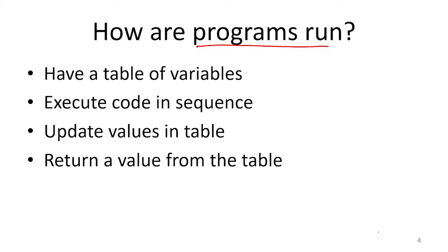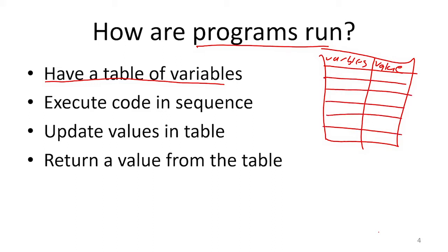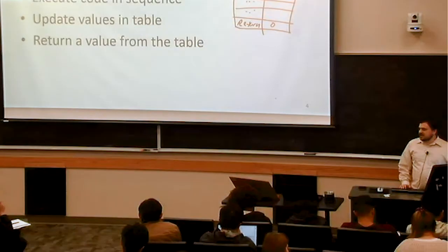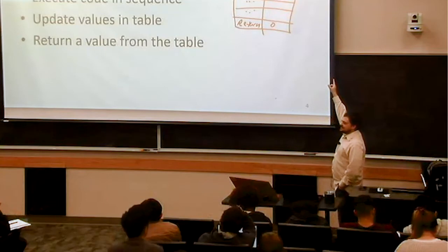The way that your computer is going to run programs is essentially: when you hit run on your computer, you're going to have this table. In this table, you're going to have a list of all the variables, one variable per row, and then you're going to have the value of each of those variables. You just fill in all of the values of the variables — maybe a is zero and then b is one. Then as you go through the lines of your program, you can start to update the values of all those variables, until eventually you get to the return, which tells you what you should be returning from this function. This is basically how your computers execute functions, and we're going to make a circuit which does this same idea.